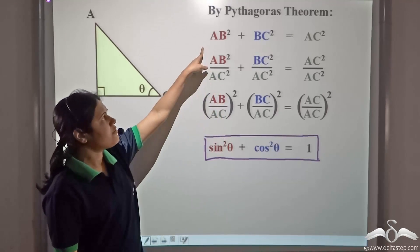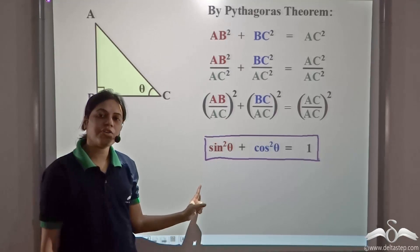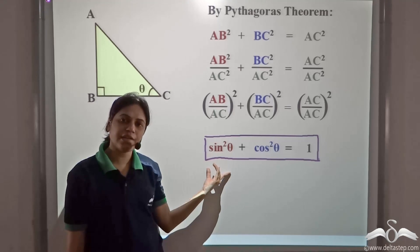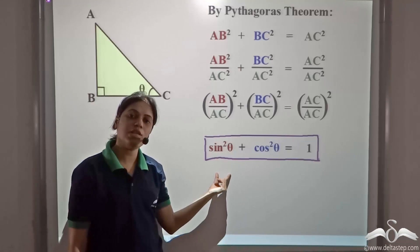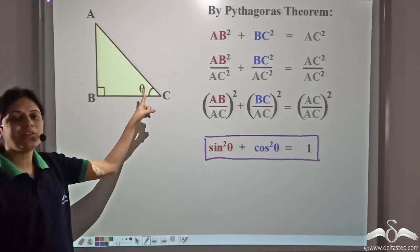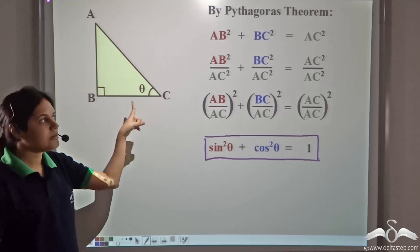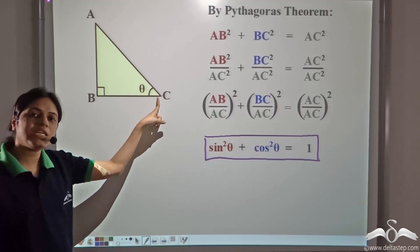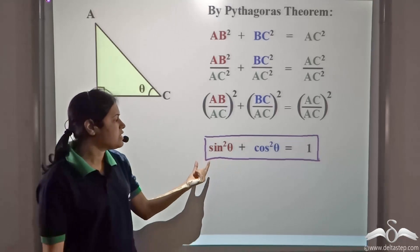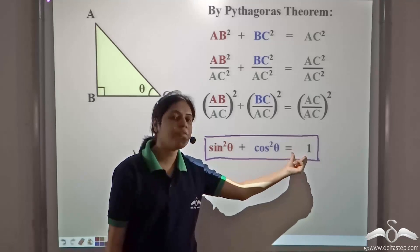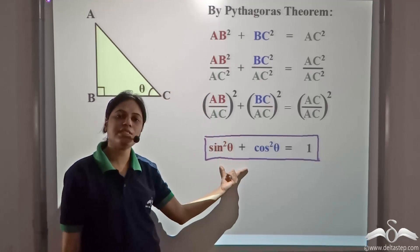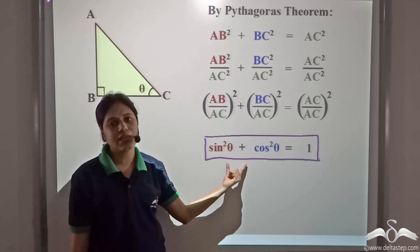We have derived this from the Pythagoras theorem. Since the Pythagoras theorem holds for all right angle triangles, this identity holds for all right angle triangles. That is, it holds for all values of theta between 0 to 90 degrees. Because in a right angle triangle, the value of theta will lie between 0 to 90, since that angle is already 90. So, theta varies between 0 to 90, and sin²θ plus cos²θ will always give you 1. Since Pythagoras theorem always holds true, this equality always holds true. So, this is an identity.